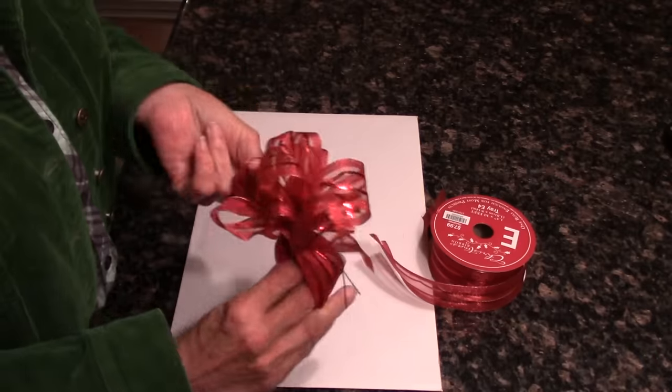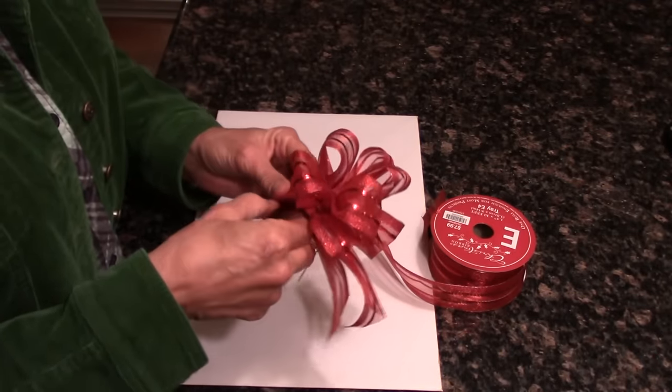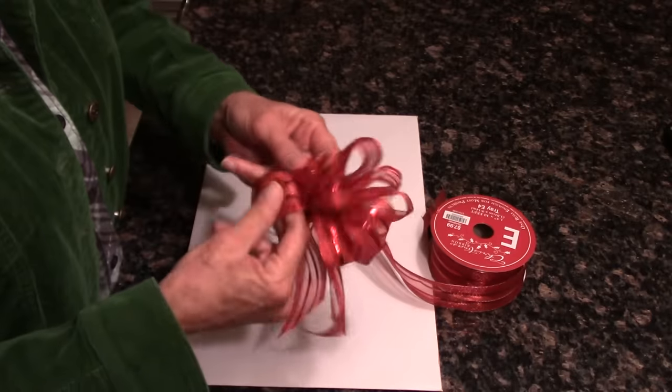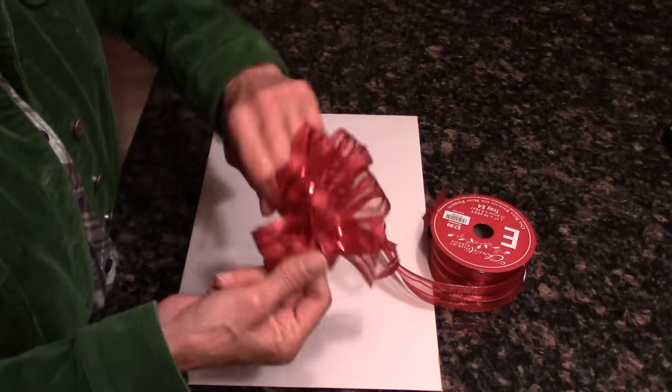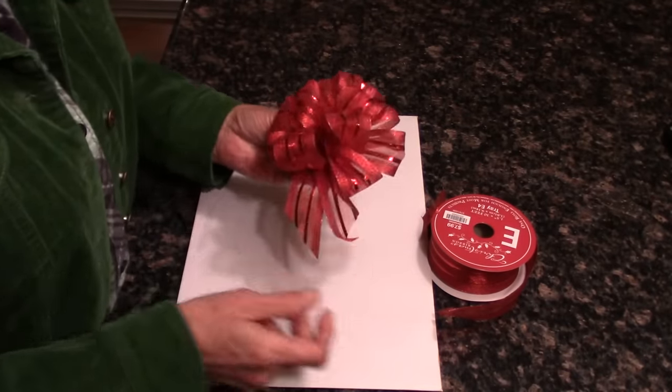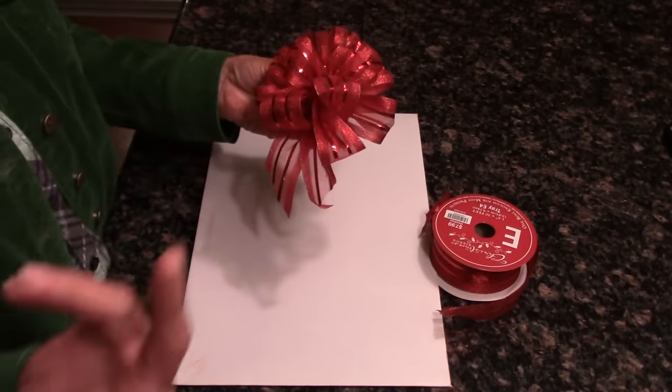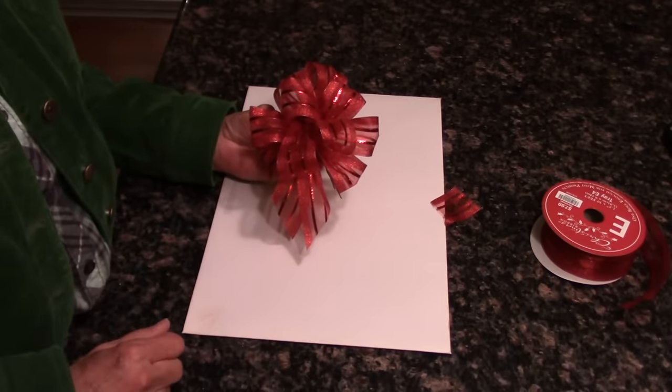The opposite side. Again, twist. The next one goes to the left. Open your little loops out and there's your bow. That's it guys, hope that helps. Thanks for watching, bye.